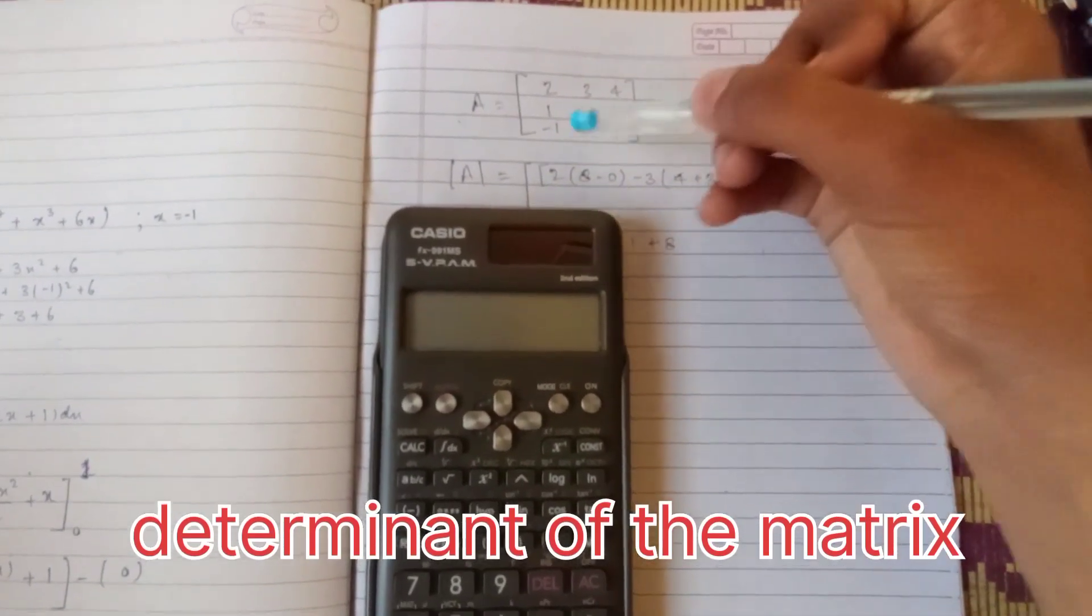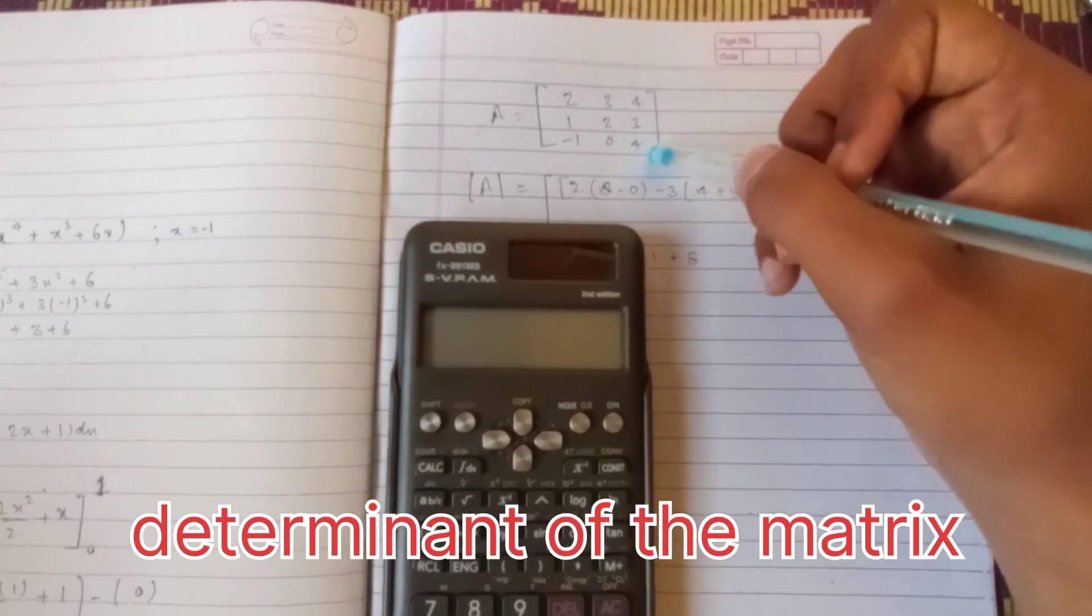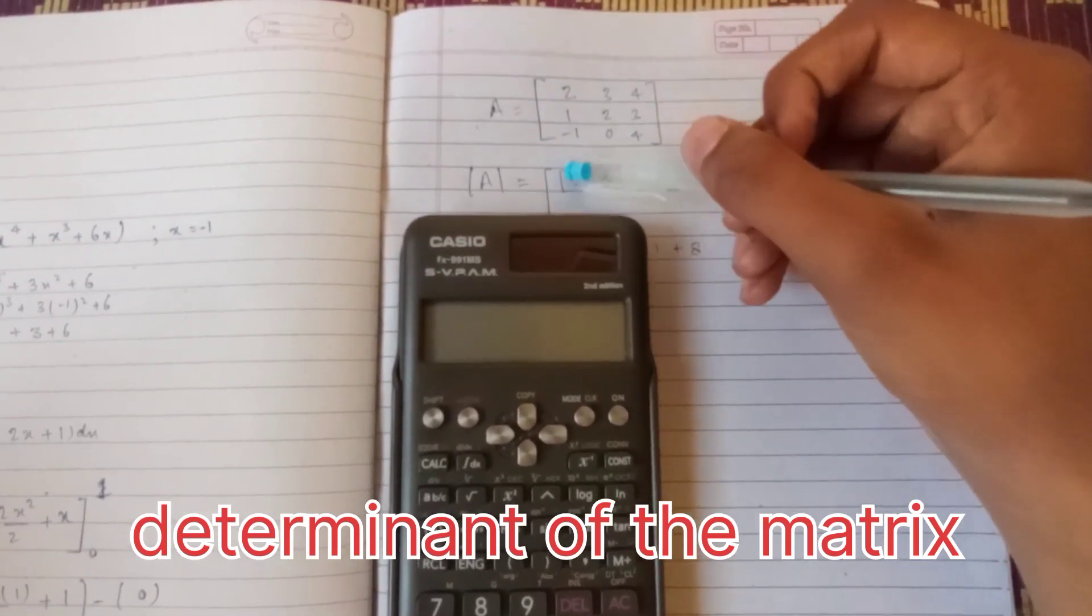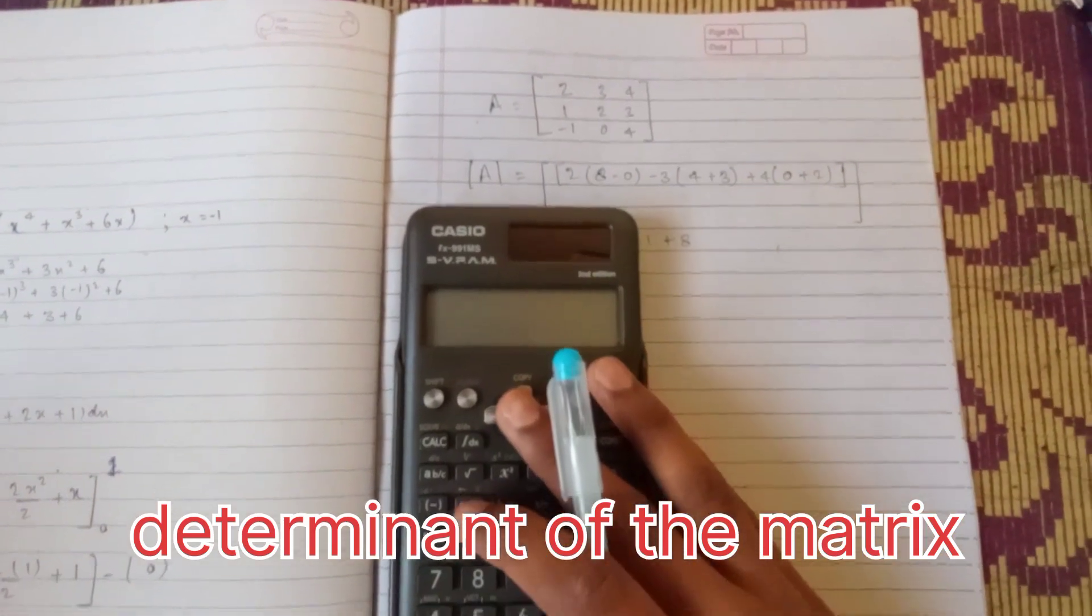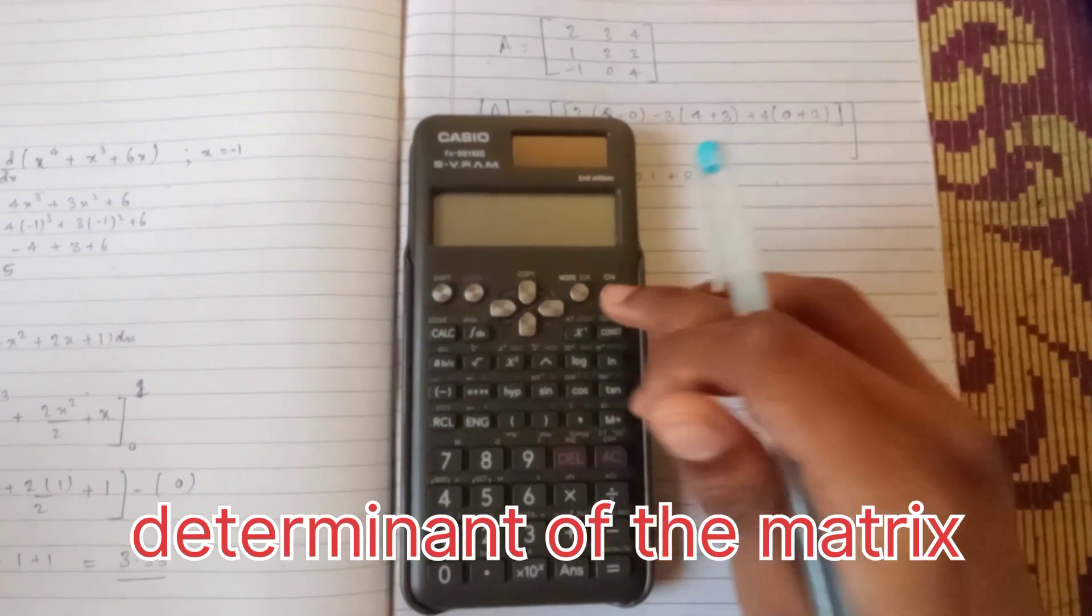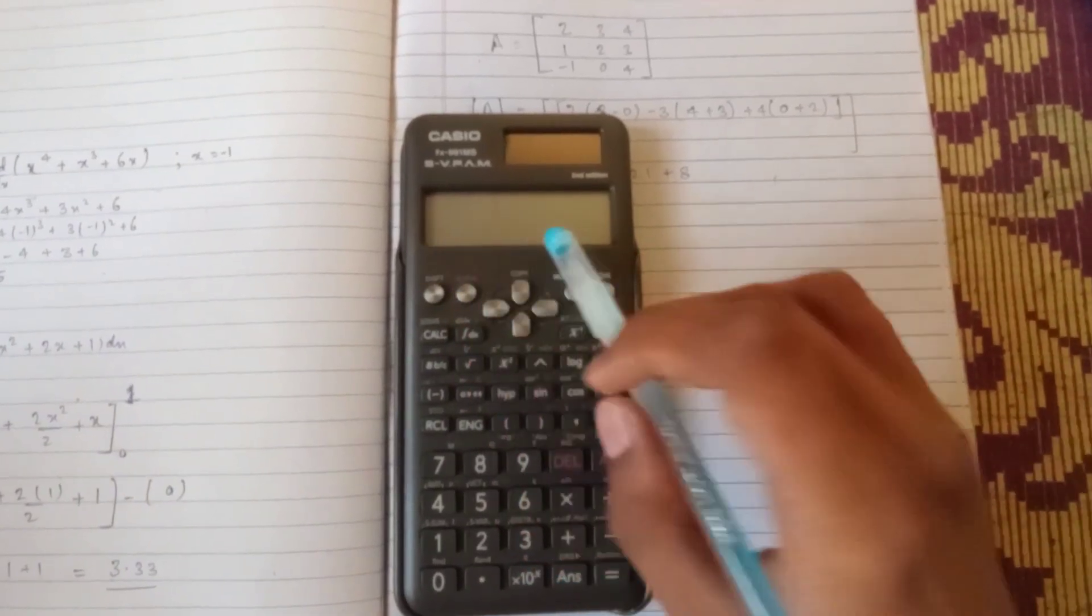The matrix we are dealing with is 2, 3, 4 in the first row and 2, 1, -1 in column A. Let's check how to get the determinant of this matrix in the calculator FX991MS.